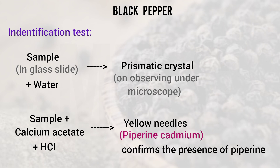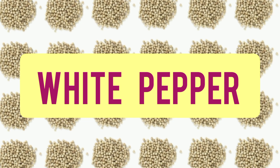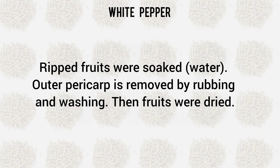Both black pepper and white pepper come from the same plant, Piper nigrum. The fruits are soaked in water, then the outer pericarp is removed and washed. The remaining dried fruits are white in color — that is white pepper.